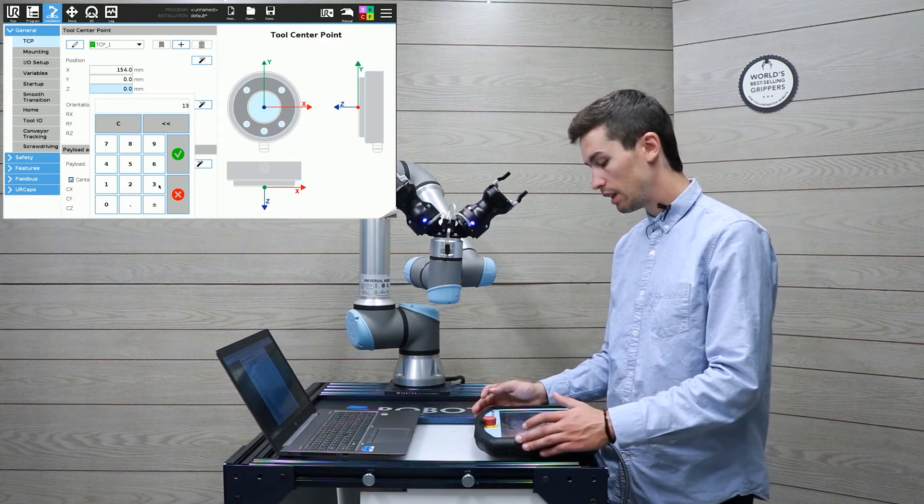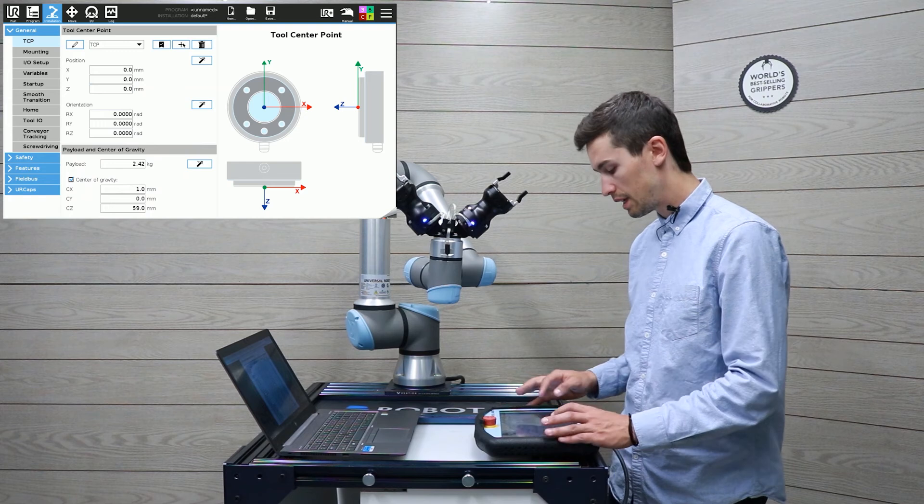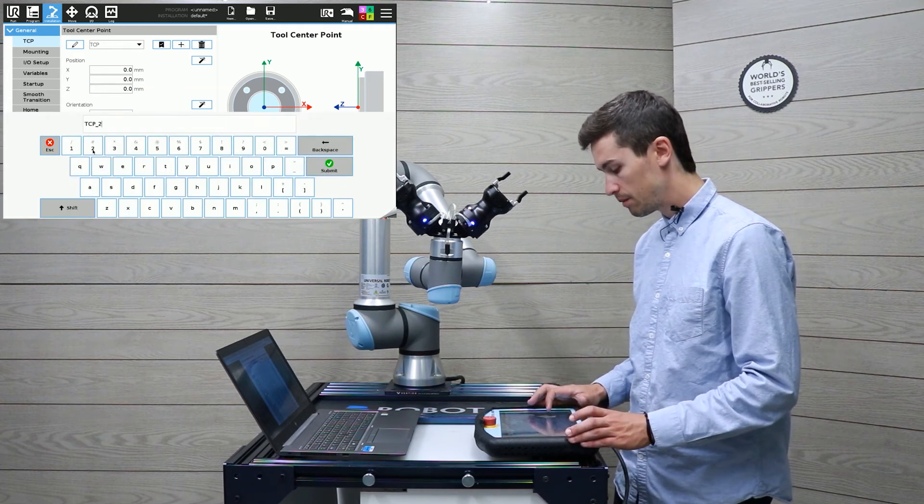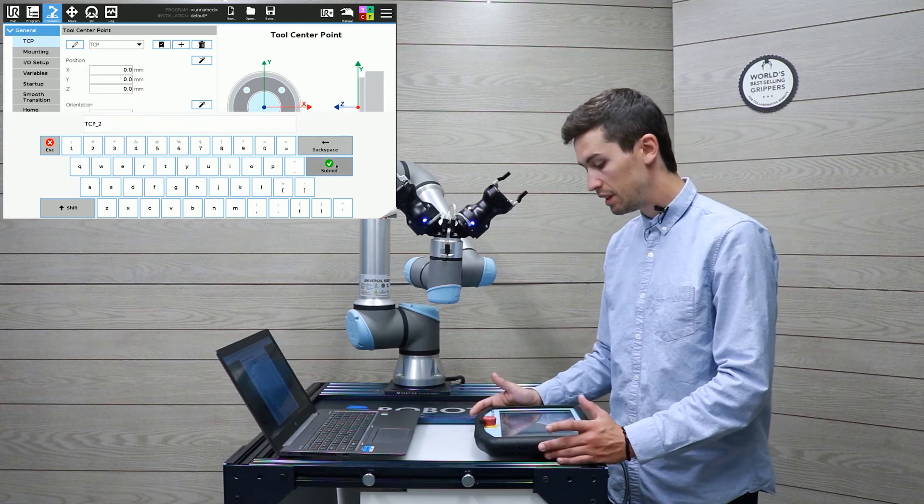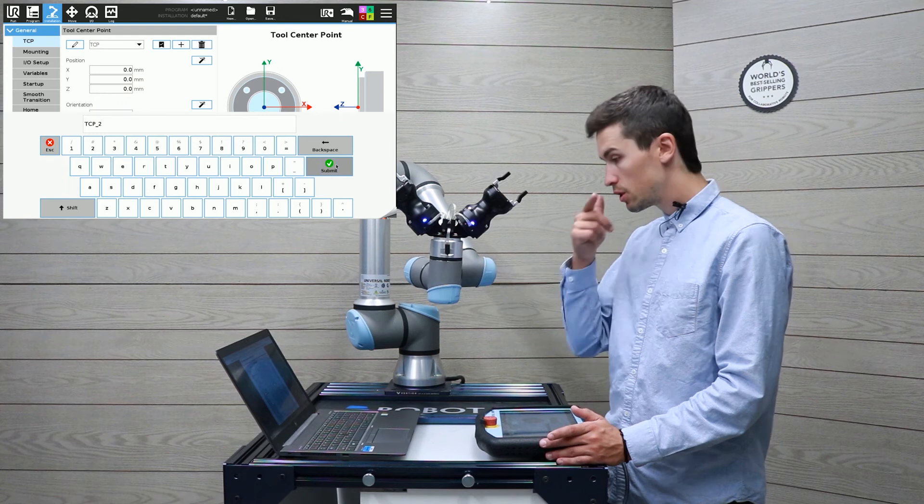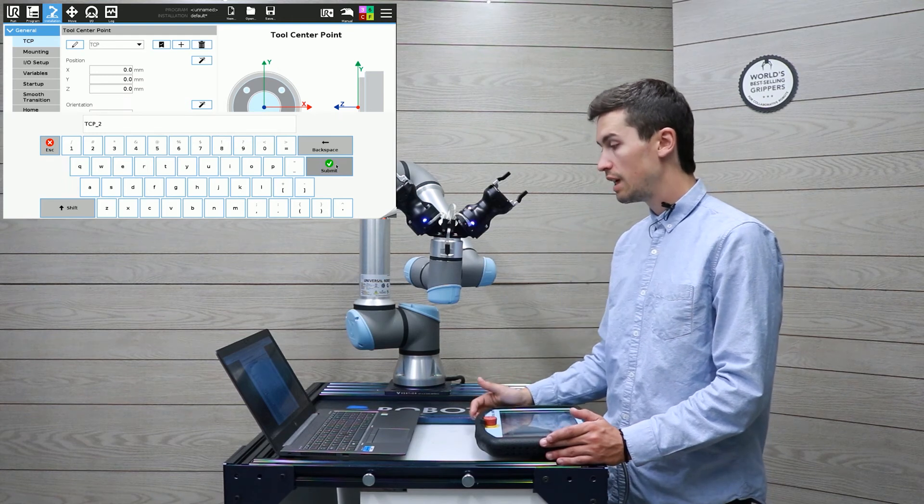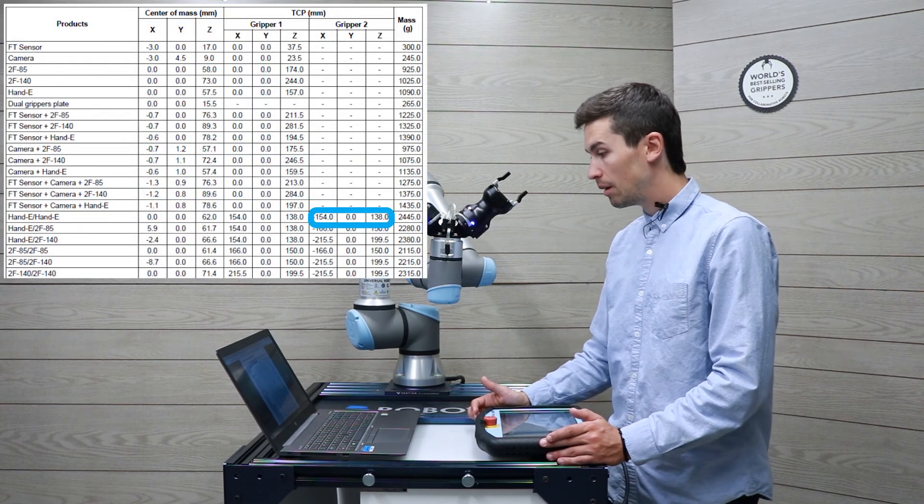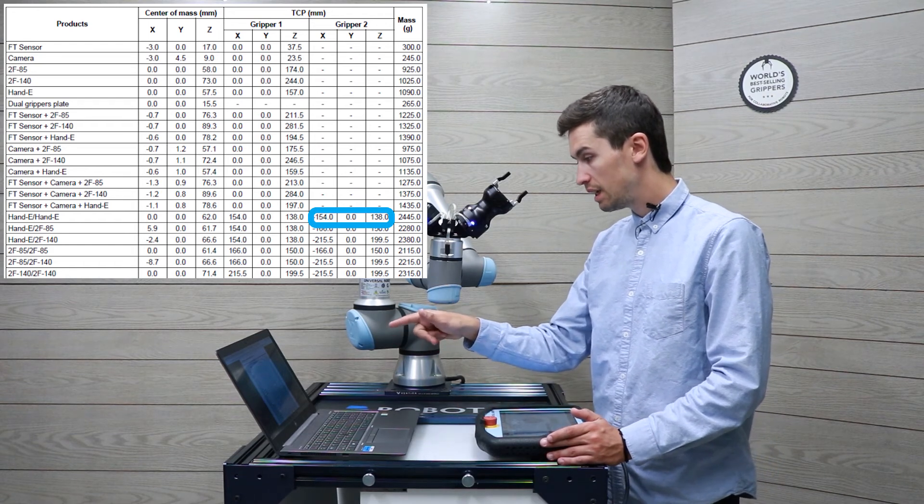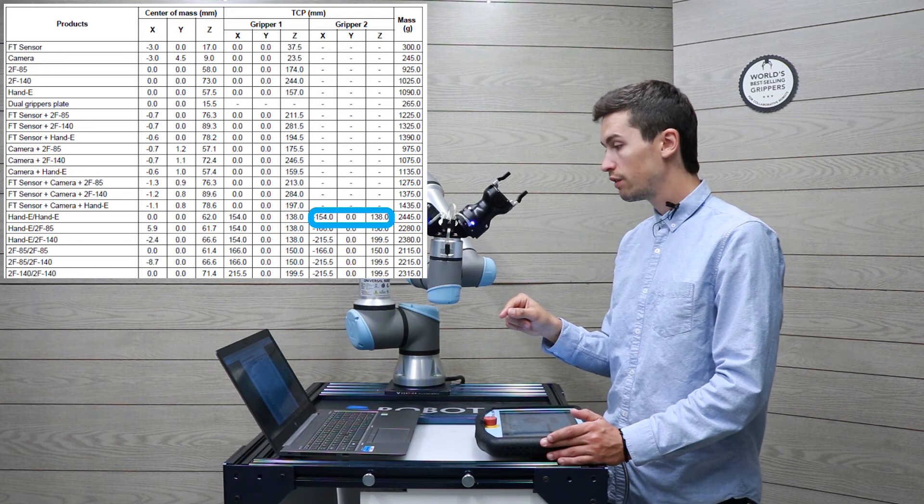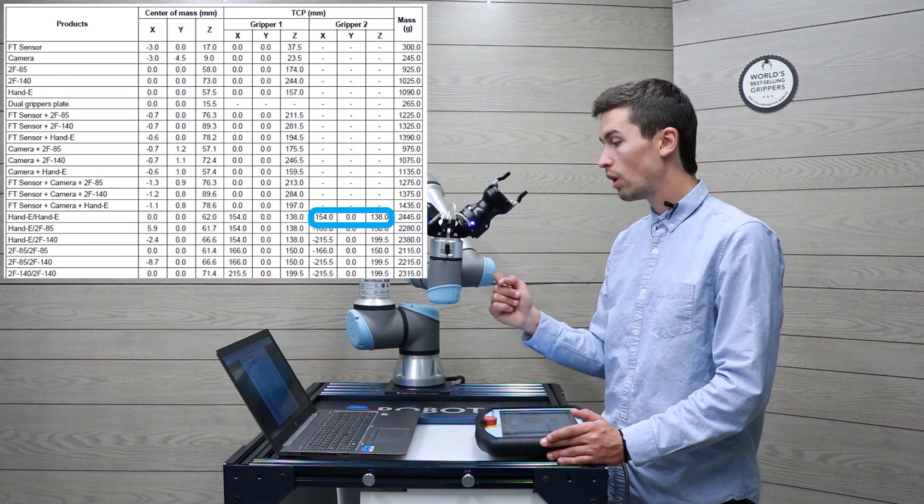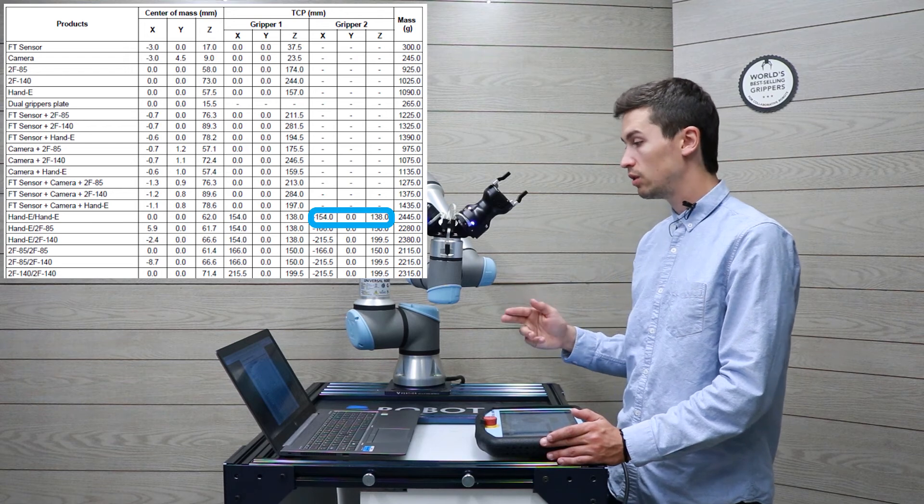And then I will add another gripper and then rename the TCP just to make sure there's no confusion. Once again, I will look into the table into the instruction manual. And as we can see, the dual ND is minus 154 into the X direction, 0 into the Y direction, and 138 into the Z direction.